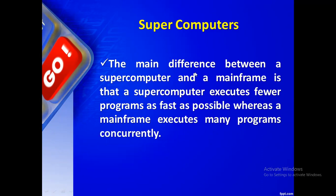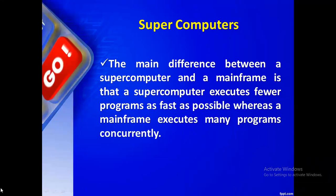The key difference between a supercomputer and a mainframe is: a supercomputer executes fewer programs as fast as possible, concentrating on one particular task. A mainframe computer executes many programs concurrently — it does multiple works in parallel, though it may take some time.